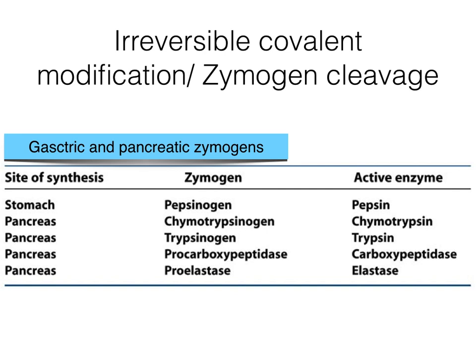This form of enzyme regulation is used to control mostly proteolytic enzymes, exemplified in this tabulation by enzymes such as pepsinogen, trypsinogen, procarboxypeptidase, and pro-elastase.